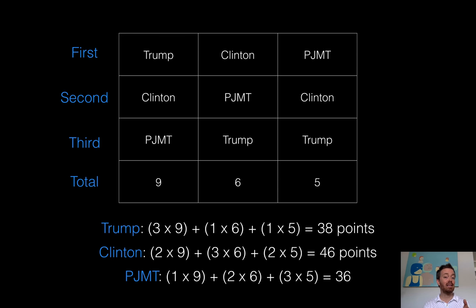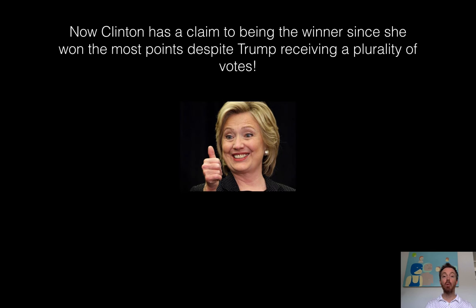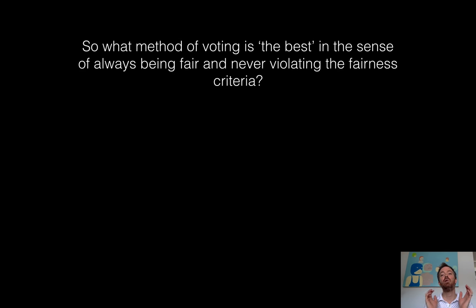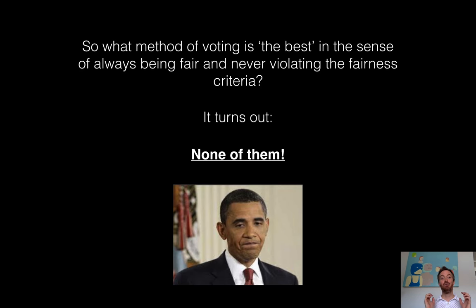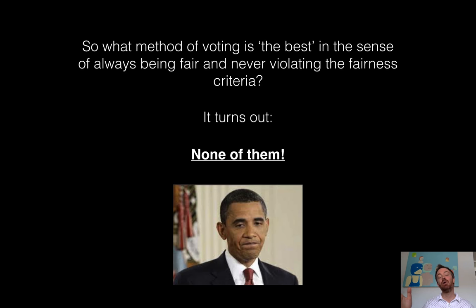By plurality, Donald Trump would win because he has the most first-place votes. But under the point system, Clinton now has a claim to being the winner — a different scenario produces a different winner. So what method of voting is the best? Which one will not violate those fairness criteria? People have been studying this problem for hundreds of years, and it turns out that none of them always satisfy all the criteria, which surprised me. Morally and philosophically I felt cheated — there's got to be a way to have fair elections.